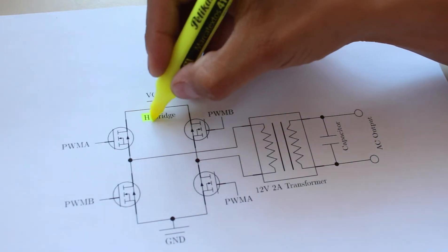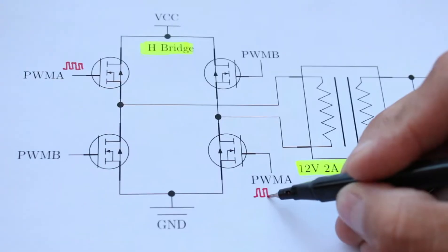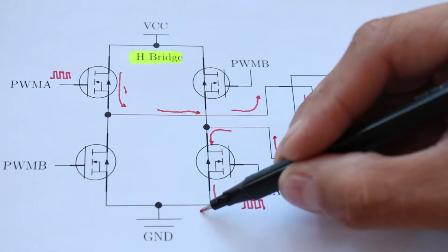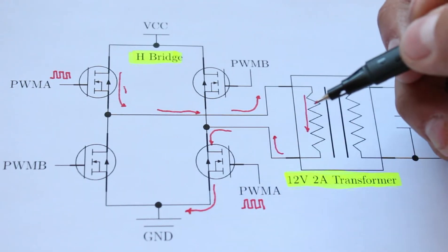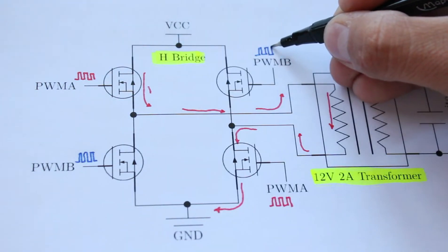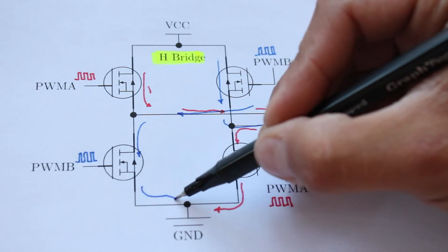Therefore, we have to use a full H-bridge. When the PWM signal is applied to the gates of the transistors Q1 and Q4, current flows from left to right. Similarly, when the PWM is applied to the transistors Q2 and Q3, the current flows in the opposite direction.